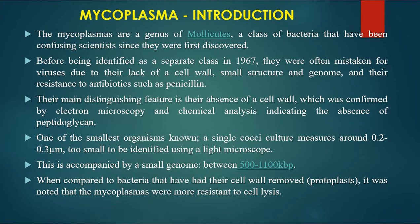Their main distinguishing feature is the absence of a cell wall, which was confirmed by electron microscopy and chemical analysis indicating the absence of peptidoglycan. They are one of the smallest organisms known — a single coccal cell measures around 0.2 to 0.3 millimicrons, too small to be identified using a light microscope, accompanied by a small genome of between 500 to 1100 base pairs. When compared to bacteria that have had their cell wall removed, known as protoplasts, mycoplasma were noted to be more resistant to the cell cycle. The main basis for separation of mycoplasma from true bacteria is the absence of a cell wall.